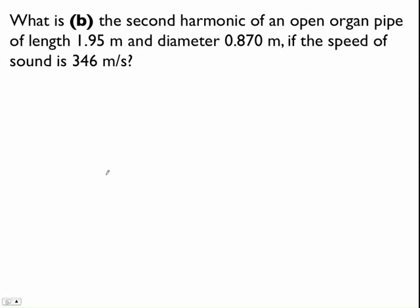So Part B says, what is the second harmonic, that's your f₂, of an open organ pipe of length 1.95 meters and diameter 0.870 meters if the speed of sound is 346. So that's our speed. So again,